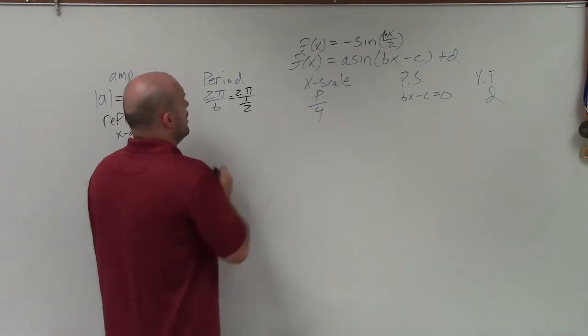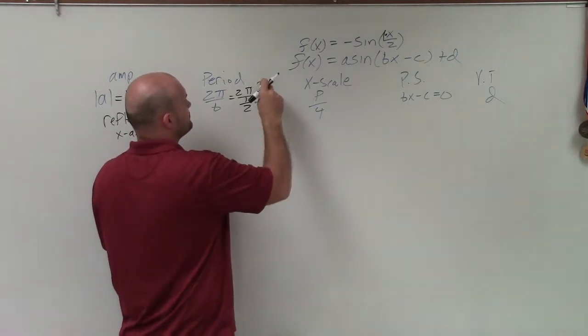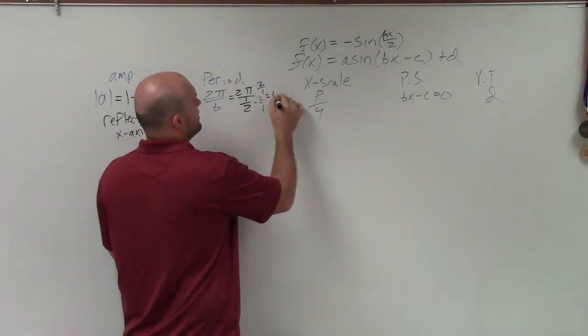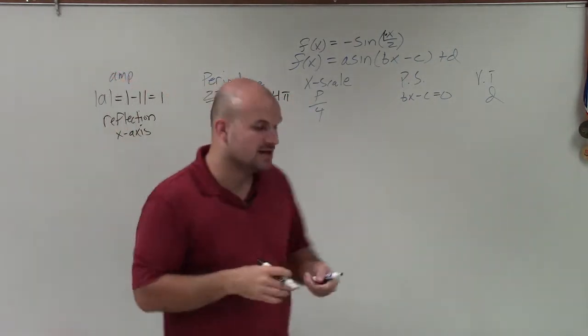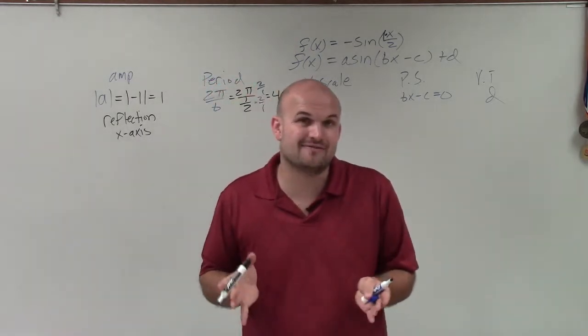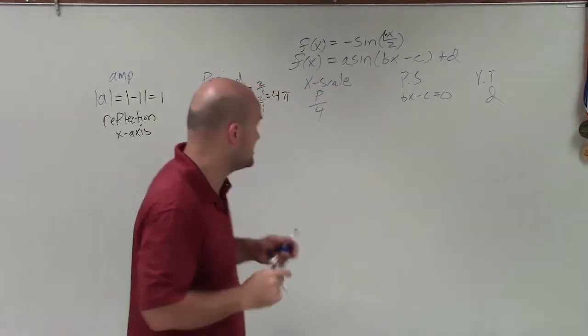Well, now to simplify to solve this, I'll multiply by the reciprocal, which is 2 over 1 on the top and the bottom. And basically, what I have is 4 pi. So my period is going to be 4 pi. So rather than the parent graph, where it takes the distance of only 2 pi to repeat itself, now it's going to take the distance of 4 pi to repeat itself.